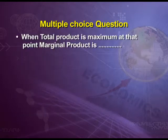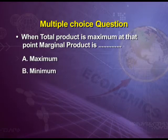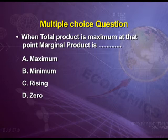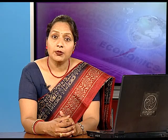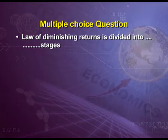Question four: when total product is maximum, at that point marginal product is — option A maximum, option B minimum, option C negative, option D zero. The answer is option D, because when total product is maximum, marginal product is zero. This question relates to the law of variable proportions in the short run. Question five: the law of diminishing returns is divided into how many stages — 1, 2, 3, or 4 stages? The answer is 3 stages.